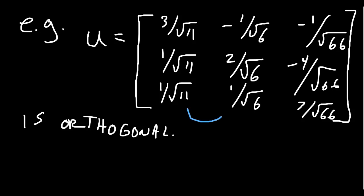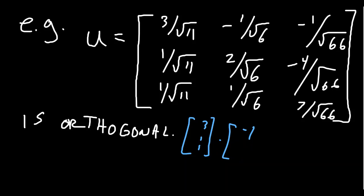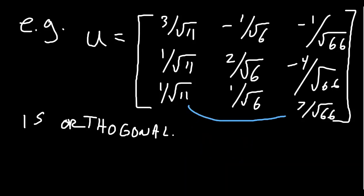Are they orthogonal? If you take the dot product of (3, 1, 1) with (-1, 2, 1), you get -3 + 2 + 1 = 0, so yes, that's an orthogonal pair. Note that scalar multiples of orthogonal vectors don't change orthogonality, so the normalizations are also orthogonal. You can check that vectors 1·3, 1·2, and 2·3 also give dot product zero, confirming this set is orthonormal.